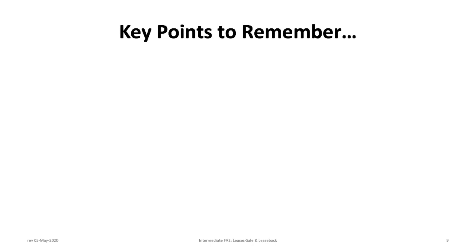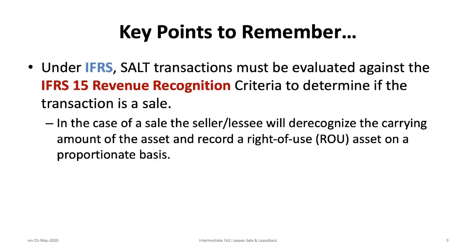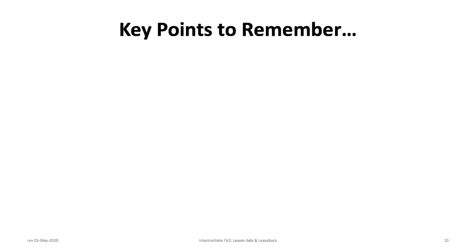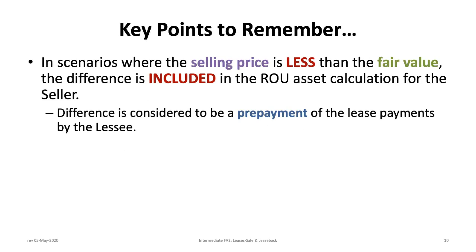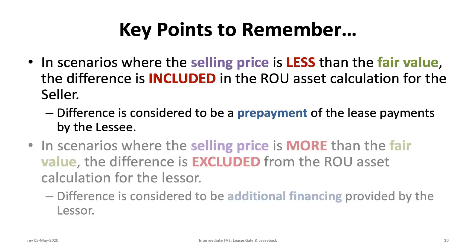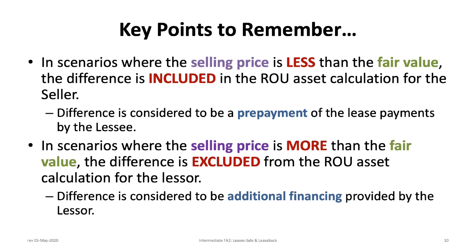Now let's review some key points to remember. Under IFRS, SALT transactions must be evaluated against the IFRS 15 revenue recognition criteria to determine if the transaction is a sale. In the case of a sale, the seller-lessee will de-recognize the carrying amount of the asset and record a right-of-use (ROU) asset on a proportionate basis. Where the selling price is less than fair value, the difference is included in the ROU asset calculation and is considered a prepayment of lease payments. Where the selling price exceeds fair value, the difference is excluded from the ROU asset and is considered additional financing provided by the lessor.